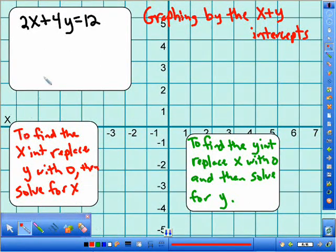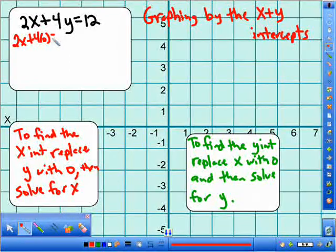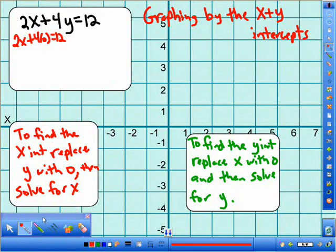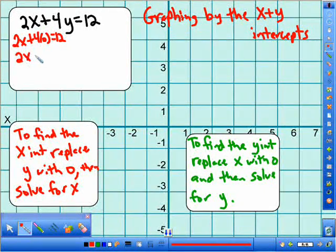So first, what does it tell me to do? To replace Y with zero. So that would be 2X plus 4 times zero is equal to 12. So what happens there? 4 times zero is zero, so 2X plus zero is just 2X is equal to 12.